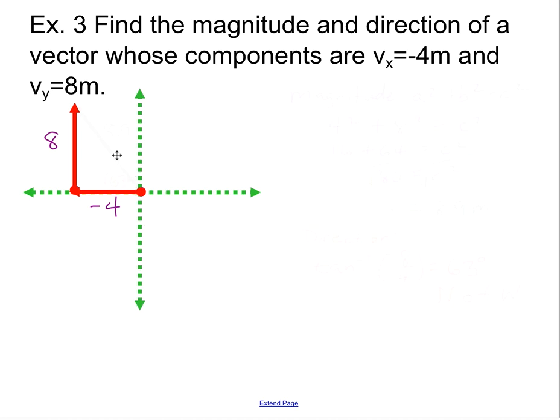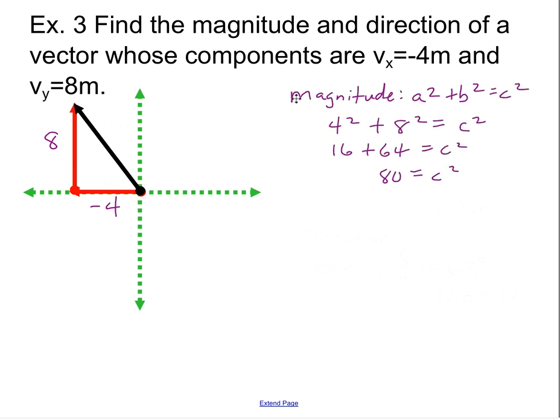Now we want to find the magnitude of our resultant vector. Here's the resultant vector. And we want to find its magnitude. So that's a simple Pythagorean theorem, a squared plus b squared equals c squared. Solving down and through this, at the end, you have to do square roots on both sides. But you get the answer 8.9 meters. So 8.9 goes over here. That's the magnitude of the resultant vector.